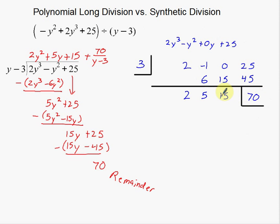I know this is going to be my remainder. This is going to be constant, linear, quadratic. So that tells me this is going to be 2y². This is going to be my +5y. This is going to be my +15. And this is going to be my remainder of 70 over, what am I dividing by? I'm dividing by y - 3.